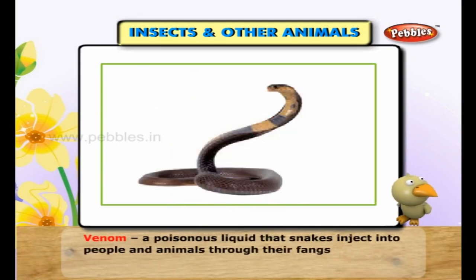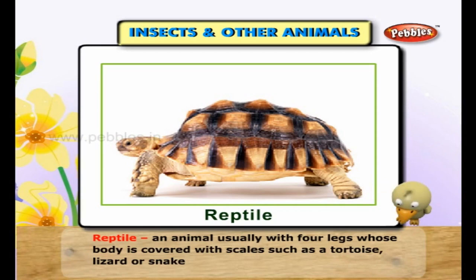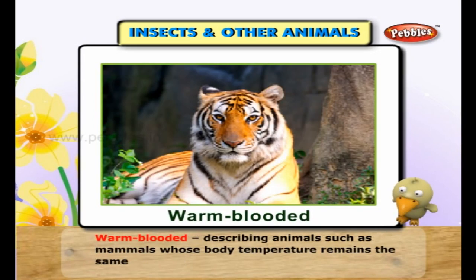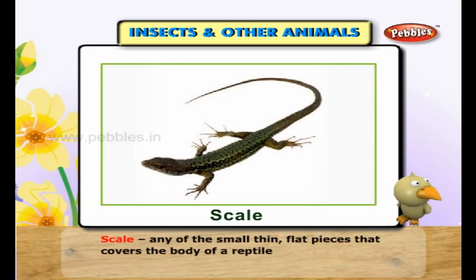Venom is a poisonous liquid that snakes inject into people and animals through their fangs. A reptile is an animal usually with four legs whose body is covered with scales, such as a tortoise, lizard or snake. Warm-blooded describes animals such as mammals whose body temperature remains the same. A wasp is a flying insect that stings and has a black and yellow body similar to that of a bee. A scale is any of the small thin flat pieces that covers the body of a reptile.